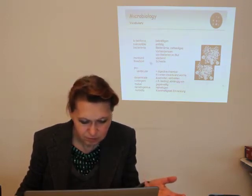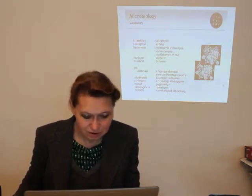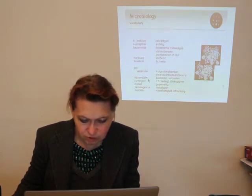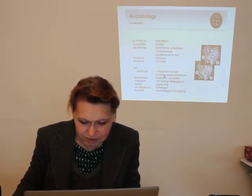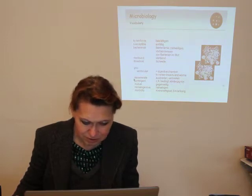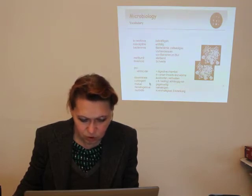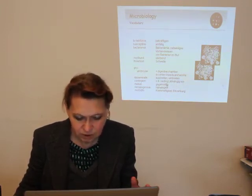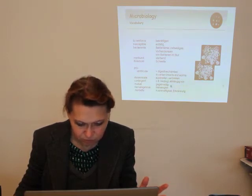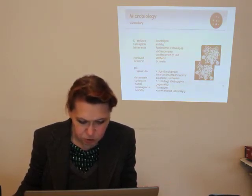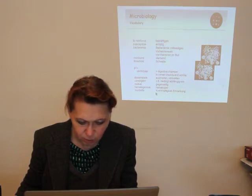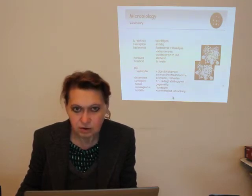So here it gets very complicated. Proventricular — like a digestive chamber in certain insects and worms. Disseminate means ausbreiten or verbreiten. Contingent means bedingt, abhängig von. Hematogenous means hämatogen. Morbidity means Krankhaftigkeit.